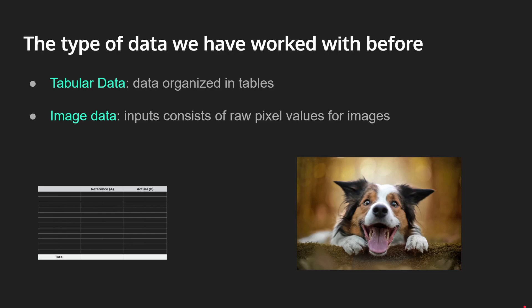Some of the types of data that we have worked with before are tabular data and image data. Tabular data are basically data organized in rows and columns, or in other words, tables. And image data are basically this image of this dog here, made of tiny, tiny pixel values for these colors. But what if our type of input is a sequence of images, or in other words, a video? Or what if it's a piece of audio or the price of a stock over a period of time? How can we deal with those kinds of data?